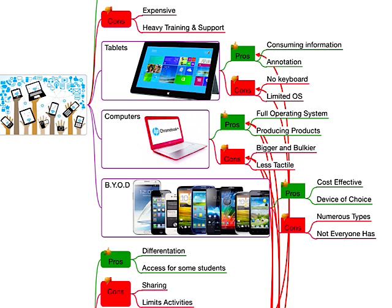As far as computers go — if we're looking at a full computer as opposed to maybe a Chromebook — one of the pros is they do have a full operating system, and in some ways they're better at producing certain products because you have more access to some of the tools on the web, and you have a mouse and a keyboard which in some cases can be better. Some cons is they are bigger and bulkier than tablets, and they can take up a lot of space on the desks. For some students, they are less tactile because it's not that direct hand-to-hand interaction with the device.